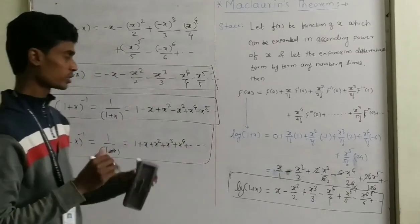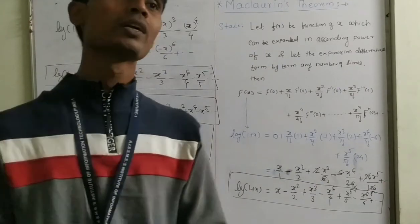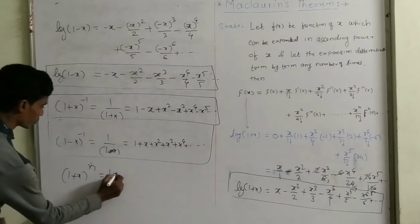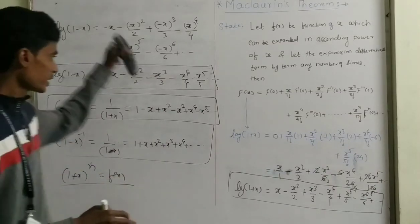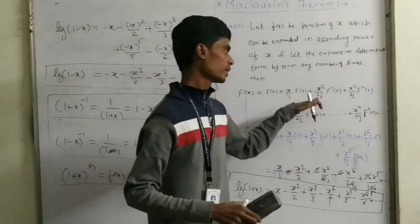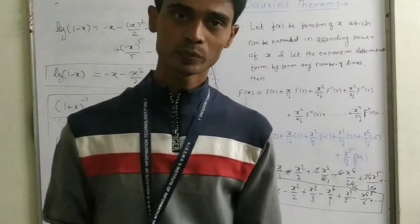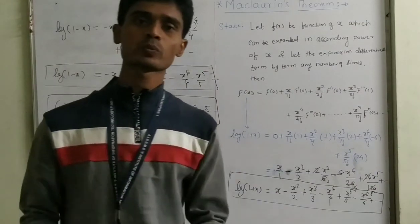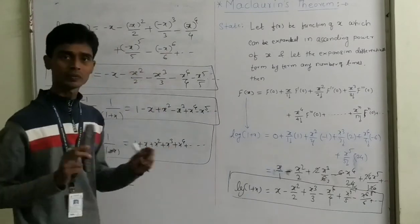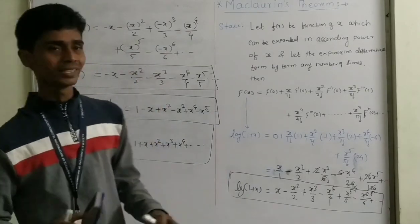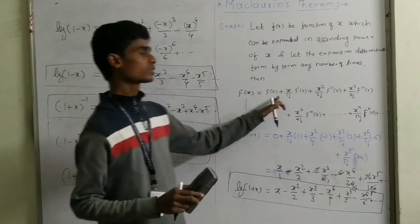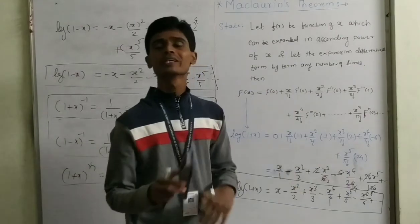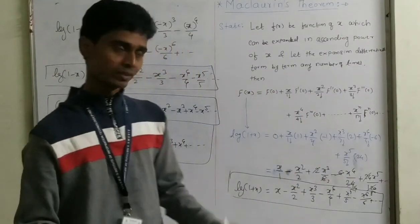So these two expansions we get using the derivative. The remaining one is the binomial expansion — please try the expansion of (1+x)^n yourself. Simply follow the same method: find out f(0), f'(0), f''(0), and putting the values we get the binomial expansion. I hope all of you understand how to use the Maclaurin theorem to find the expansion of all such types of functions. Thank you so much.